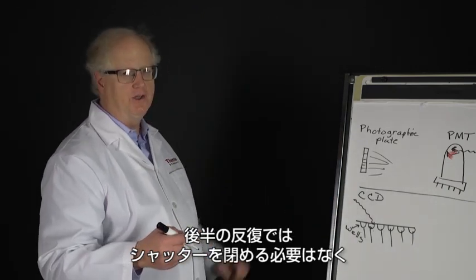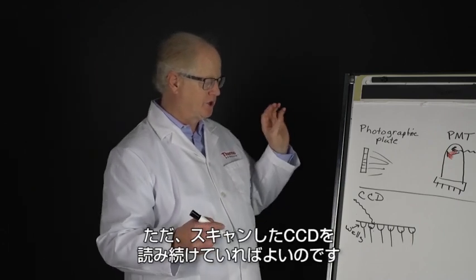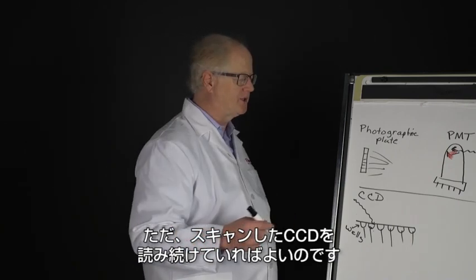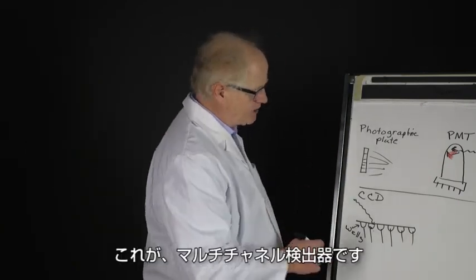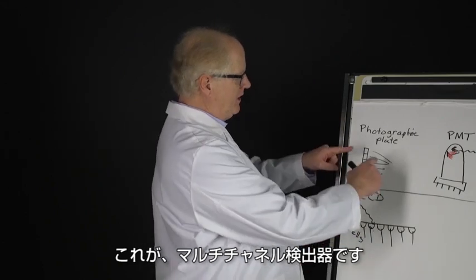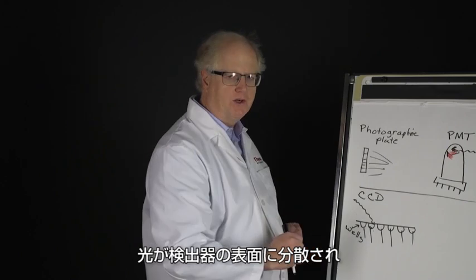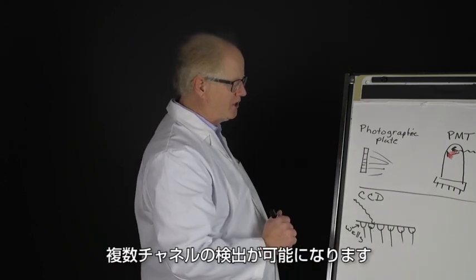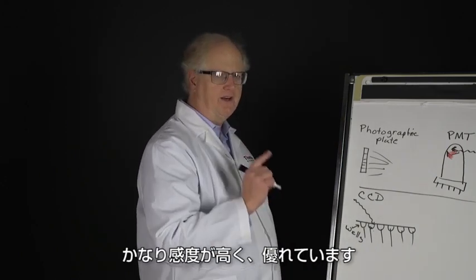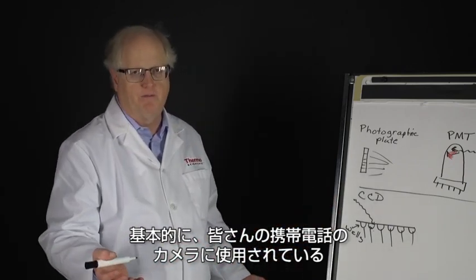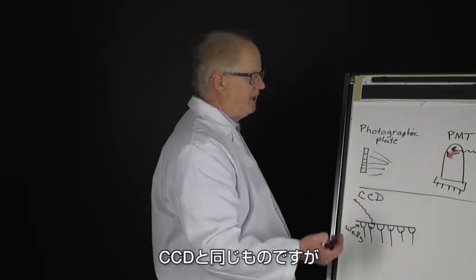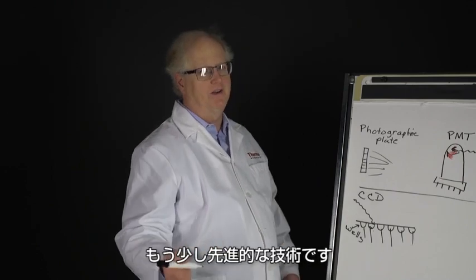In later iterations, you would just keep reading the CCD as you scan. So this is a multi-channel detector similar to the photographic plate. The light would spread out over the surface of the detector, give you multi-channel detection - quite sensitive, quite good. It's basically the same thing that's in your cell phone camera, but obviously a little more advanced, a little more sophisticated electronics behind it.